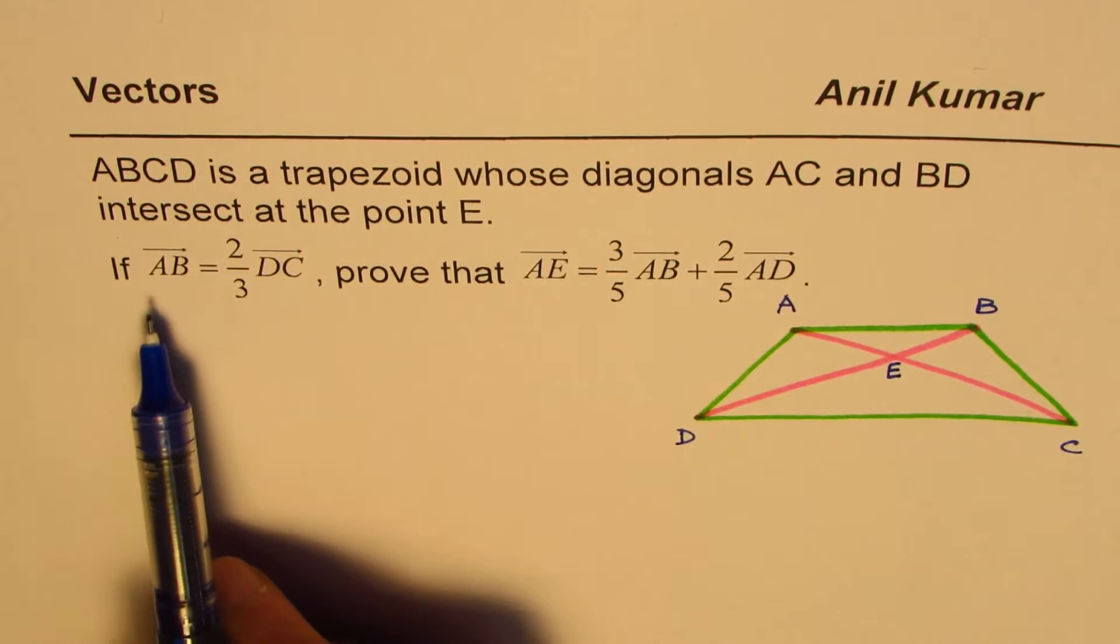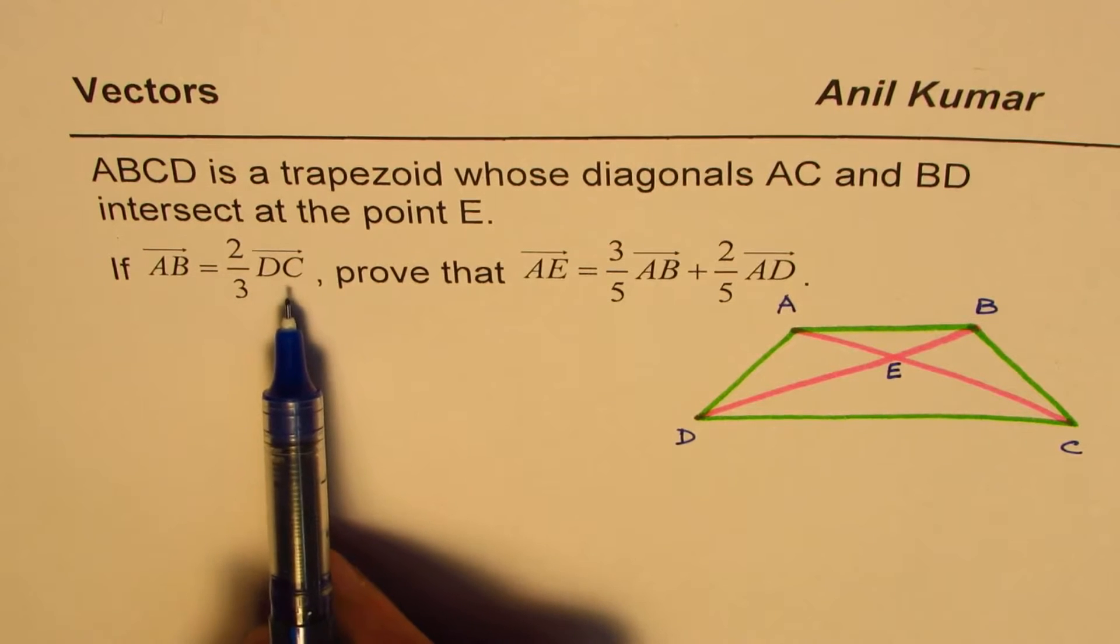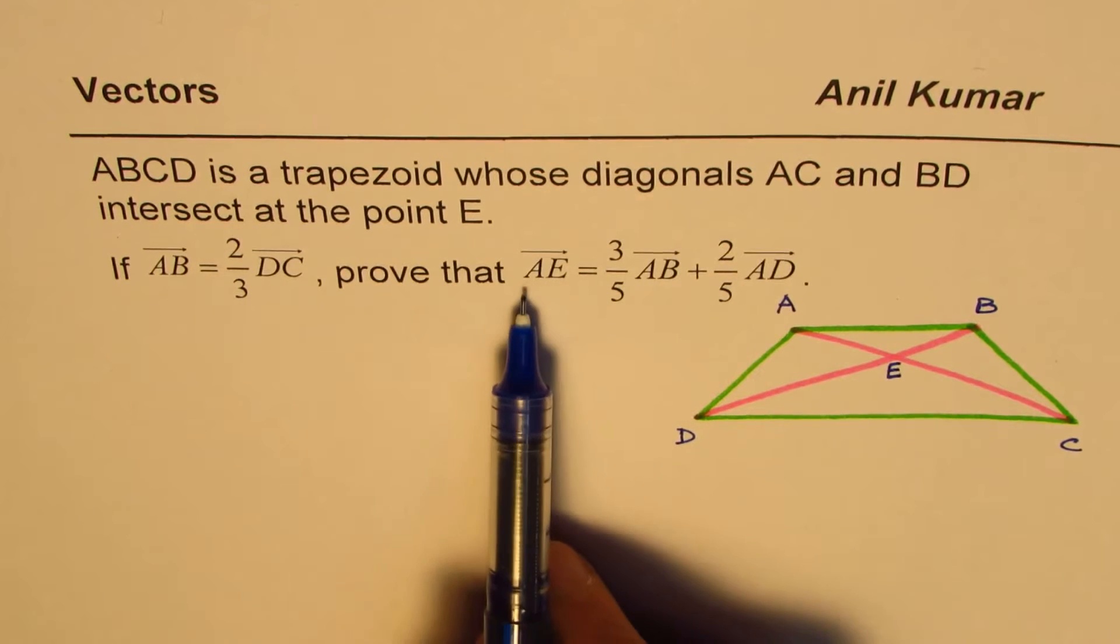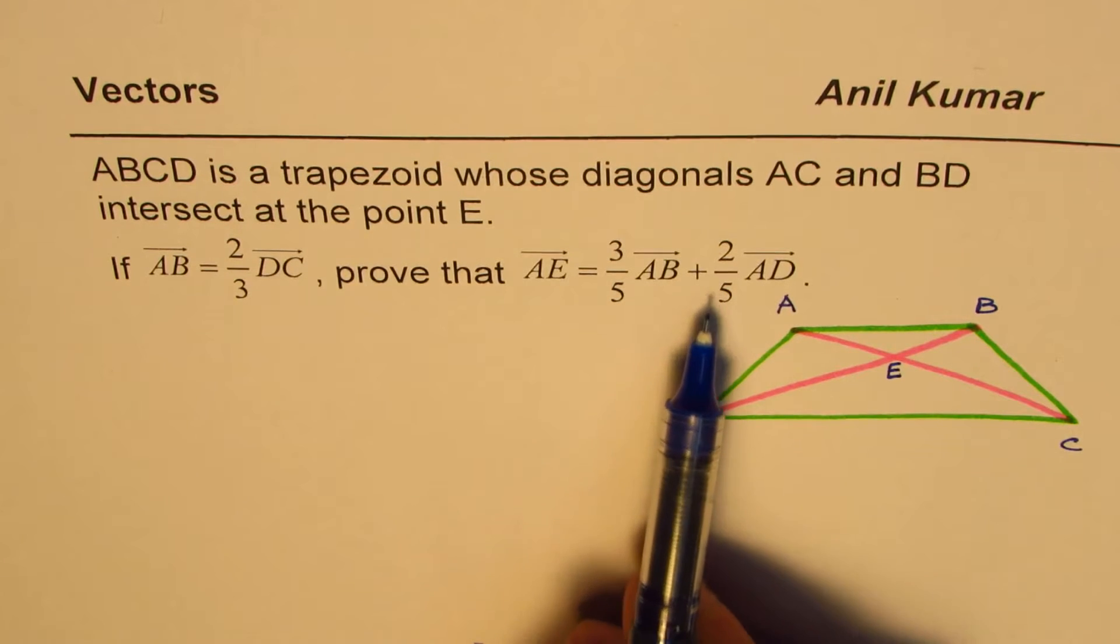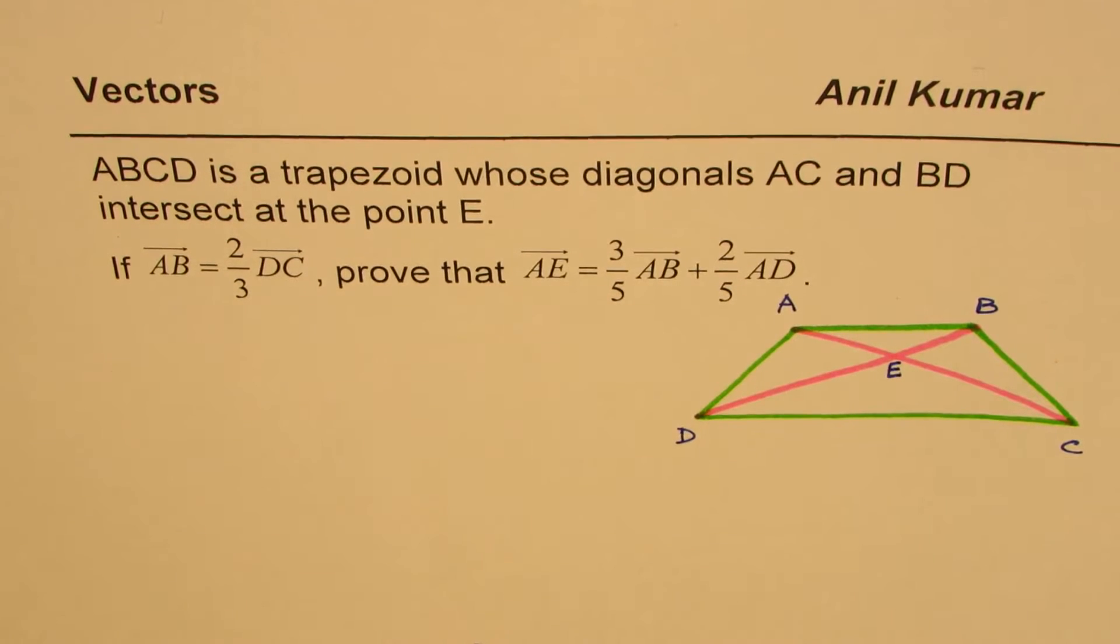If AB is two-third of DC, prove that AE is 3 over 5 of AB plus 2 over 5 of AD. You can pause the video, answer the question, and then look into my suggestions.